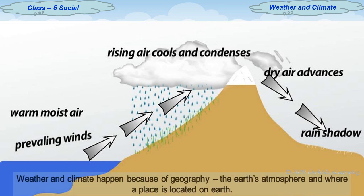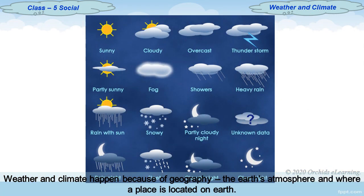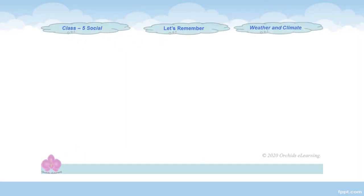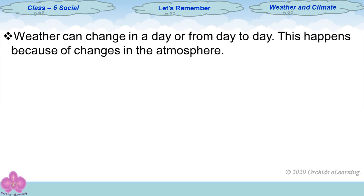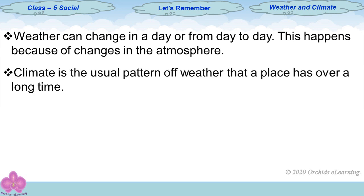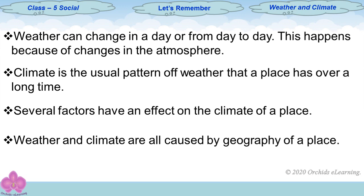Weather and climate happen because of geography, the earth's atmosphere, and where a place is located on earth. Let's remember: weather can change in a day or from day to day because of changes in the atmosphere. Climate is the usual pattern of weather that a place has over a long time. Several factors have an effect on the climate of a place, and weather and climate are all caused by the geography of a place.